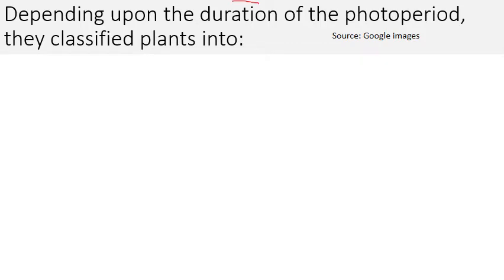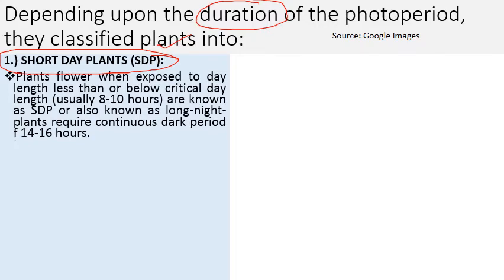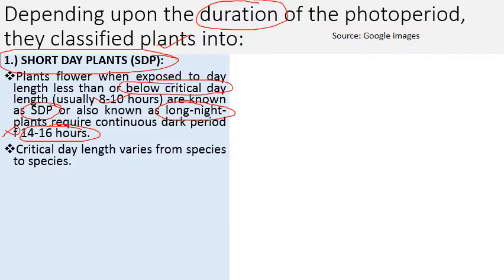Depending upon the duration of the photoperiod, plants can be classified into various categories. The first category is short day plants. These are plants which require a photoperiod less than the critical day length. Plants flower when exposed to a day length less than or below the critical day length — that is usually 8 to 10 hours. These are also known as long night plants, and they require a continuous dark period of 14 to 16 hours. The critical day length is not fixed for all species — it varies from species to species.